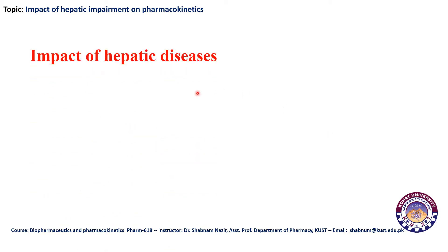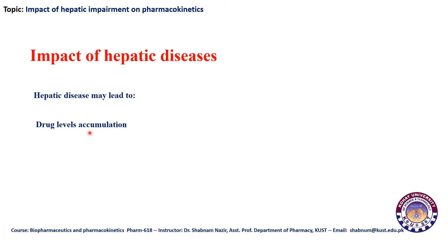Hepatic diseases may lead to drug level accumulation. If a patient suffering from liver disease is administered doses of a drug continuously, the drug is not being converted into its metabolites and remains in its active form, so drug levels accumulate within the body, potentially reaching toxic levels.